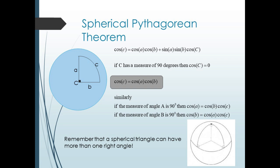Remember that a spherical triangle can have more than one 90-degree angle — in fact, they could all three be 90 degrees.